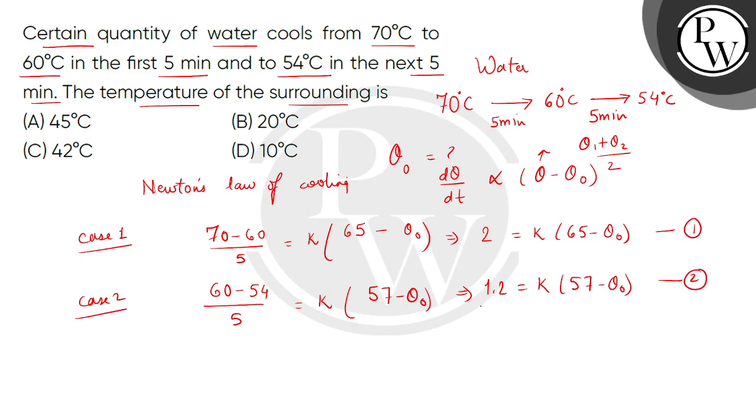Dividing the equations, 2 divided by 1.2 equals to 65 minus theta naught over 57 minus theta naught. Solving this gives us the temperature of the surrounding as 45 degrees Celsius.